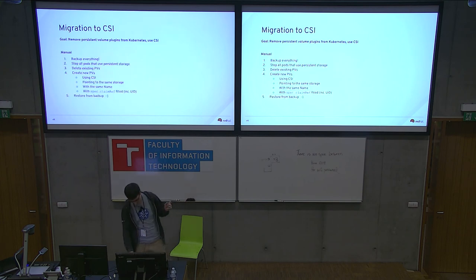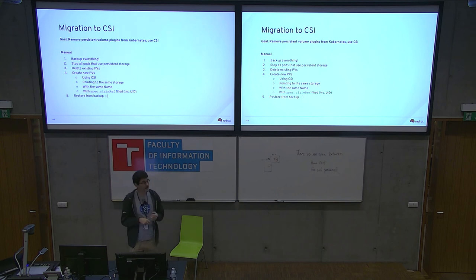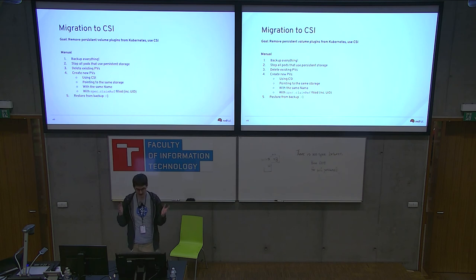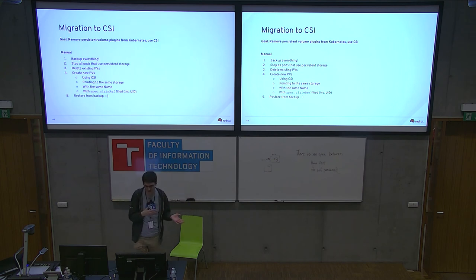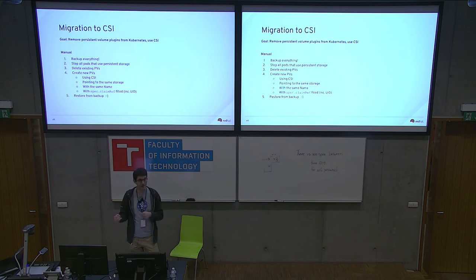Until we have automatic migration, you can do it manually if you have persistent volumes in your cluster. Please back up first — you may need it. Basically, you have a cluster with your persistent volumes, you must stop everything that uses them, delete the persistent volumes and replace them with the CSI counterparts. You can't edit persistent volumes right now — this is prohibited by API validation — so you must delete them and create new ones. If you do that, it should work.